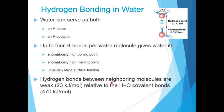point or high melting point or its unusually large surface tension. Hydrogen bonds between neighboring molecules are weak, which is about 23 kilojoules per mole. This bond is about 23 kilojoules per mole, whereas the OH covalent bond is about 470 kilojoules per mole.